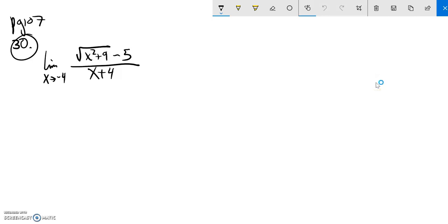Math 151, we're looking at page 107, that's section 2.3, and we're doing problem number 30 right now. What we're asked to do is find the limit of this function, whoops, sorry about that, limit of this function as x approaches negative 4.